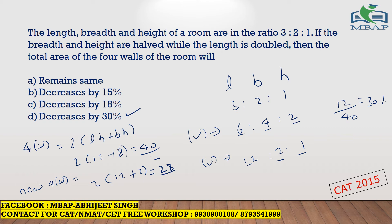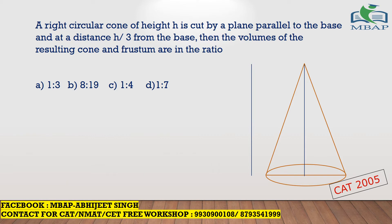The next question is CAT 2005. A right circular cone of height H is cut by a plane parallel to the base at a distance of H by 3 from the base. The question involves a right circular cone of height H, and they say it has been cut along an axis parallel to the base.